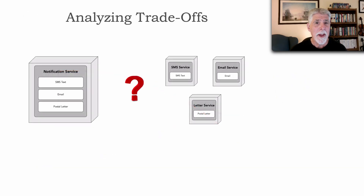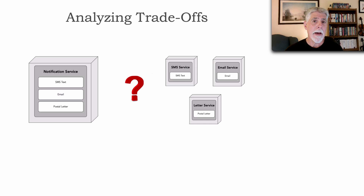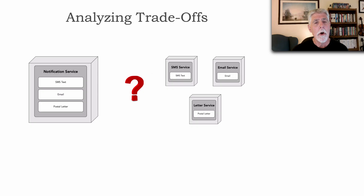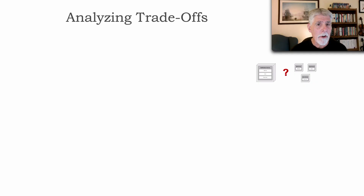Another technique we can use is called trade-off analysis. This technique can actually help us avoid analysis paralysis and make a decision possibly faster than the last responsible moment. For example, let's say we have a notification service and we're wondering whether we should break that up into three separate services. One of the things we can use is modern trade-off analysis, and it all starts with understanding the business drivers.